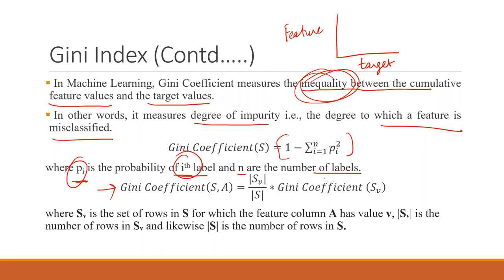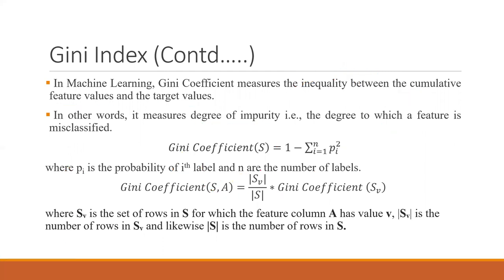The Gini coefficient of dataset S and attribute A is calculated as follows: sum over values v of (|Sv| / |S|) × Gini(Sv), where Sv is the set of rows in S for which feature column A has value v, |Sv| is the number of rows in Sv, and |S| is the number of rows in S.